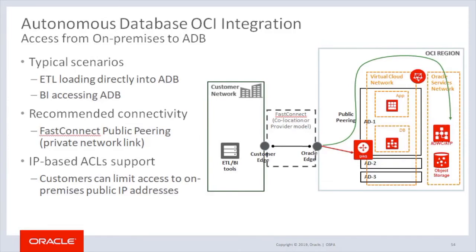As with other Oracle Cloud Services, one of the objectives of the Autonomous Database is the ability to migrate on-premises databases to Autonomous Databases. Typical scenarios include Extract, Transfer, and Load directly into ADB, and Business Intelligence applications accessing ADB directly to perform analytics and visualization of data. The recommended connectivity for Autonomous Database is through Oracle's Fast Connect public peering. Public peering enables you to access public services in the cloud without traffic traversing the internet. Using Fast Connect public peering, you can connect the public load balancers in your VCN, public on-compute, or supported SaaS, as well as Oracle's Autonomous Database Service. Fast Connect can be implemented as a co-location or provider model.